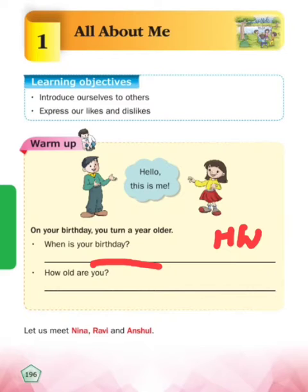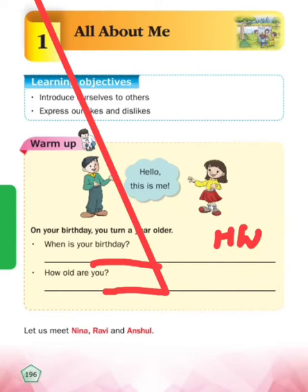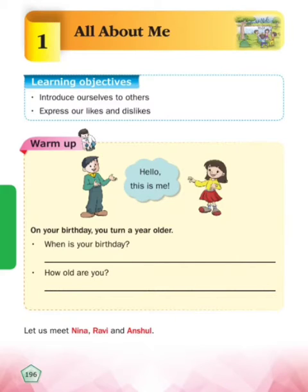Second is: how old are you? This is also your homework - you have to write here how old you are, ki aap kitne bade ho.